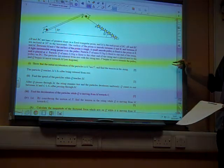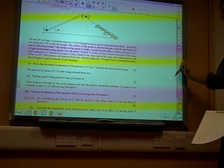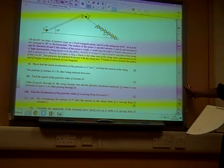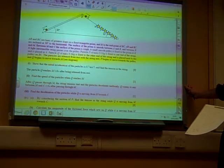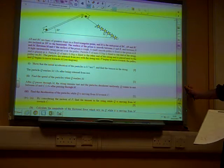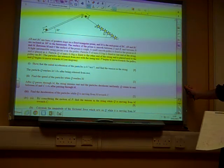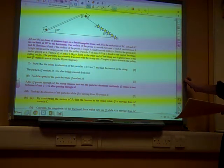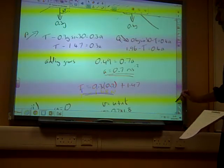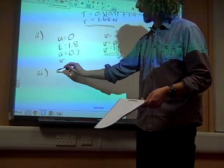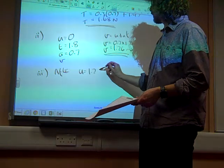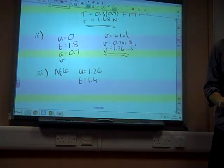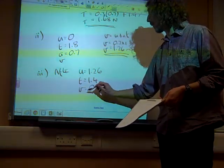The question also said at this point, oh, it says after Q passes through M, the string remains taut. But the particles decelerate uniformly. Q comes to rest between M and C 1.4 seconds after passing through M. Find the deceleration of the particles while Q is moving from M towards C. Well, actually, what we did, the string remains taut. So, we've just got the same kind of constant acceleration thing going on here. We've got a new acceleration. But we need to just find out what the acceleration is. We've got another bit of SUVAT work to do with this. We've got, now, after M, we have an initial speed of 1.26. That's the speed at which it hits this point. We've got 1.4 seconds to watch what's going on. After 1.4 seconds, they've come to rest. So, V is 0. And I want to find acceleration.